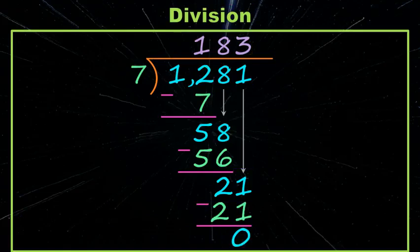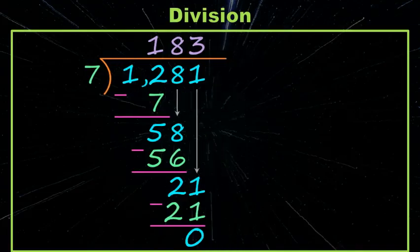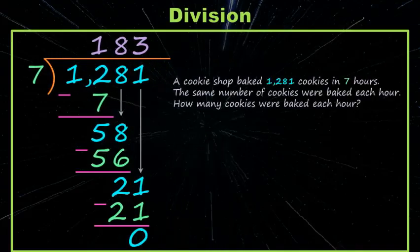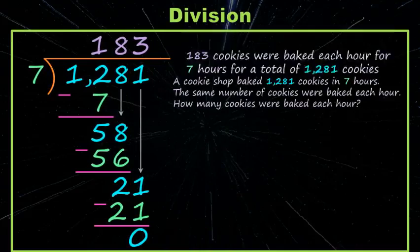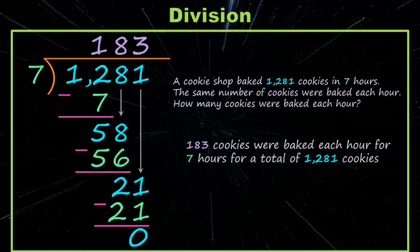So what were we trying to find out again? Let's go back and look. Oh yes, we baked so many cookies in seven hours and we want to know how many were baked each hour. So we've learned that 183 cookies were baked each hour for seven hours, which gave us a total of 1,281 cookies.